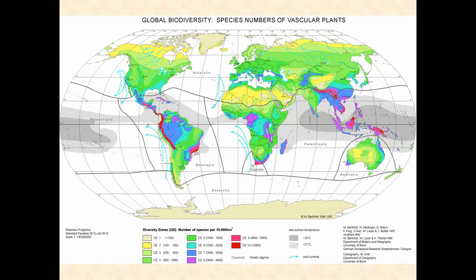This is a global map of biodiversity of vascular plants, which we discussed in our last topic, Life Through Time. The deep red areas indicate the highest biodiversity — over 5,000 species in a particular area. You should recognize a pattern: the reds and purples straddle the equator. Equatorial areas have the highest biodiversity because most organisms like it hot and wet. As you move toward the poles, biodiversity decreases. This pattern holds for other organisms as well.